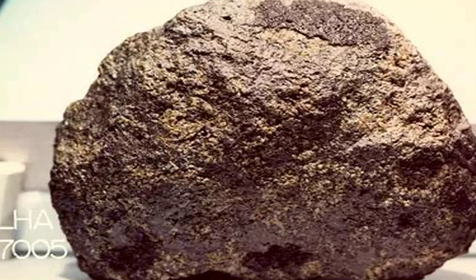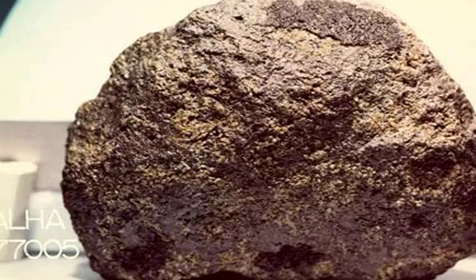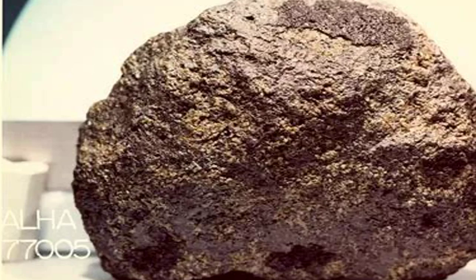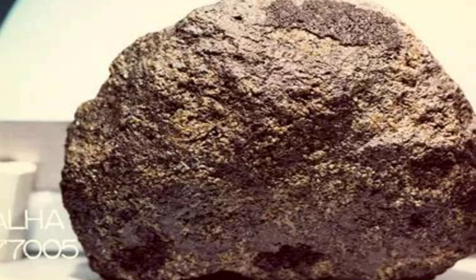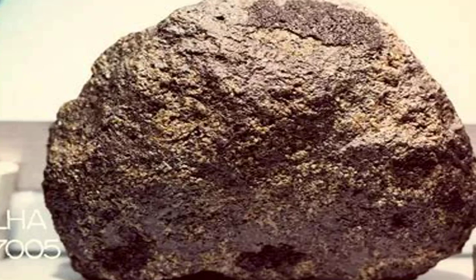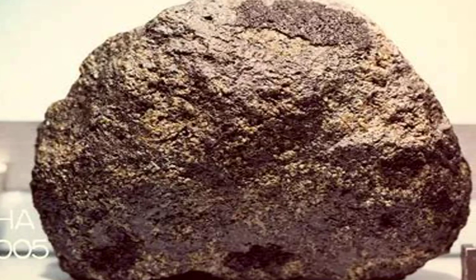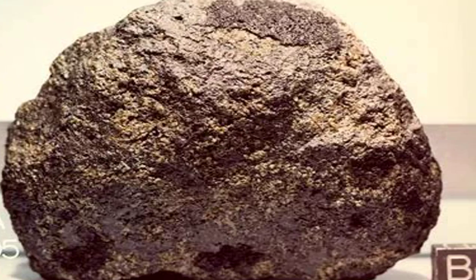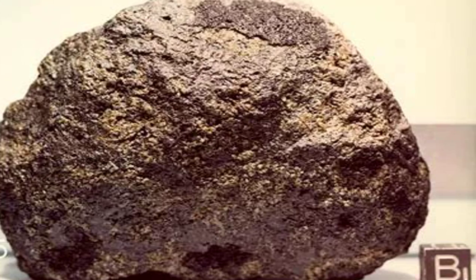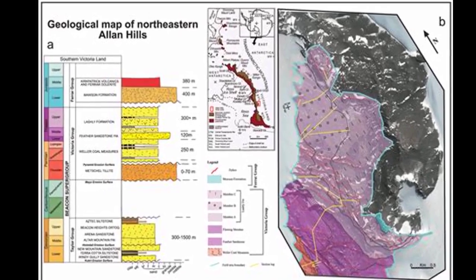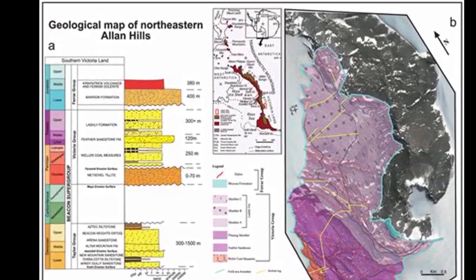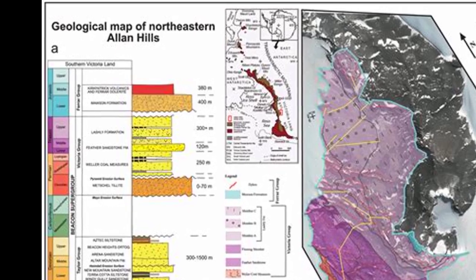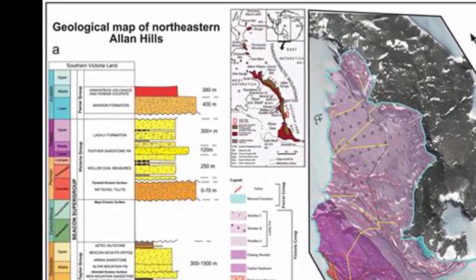Type: achondrite, unique. Physical description: the specimen is well-rounded on all faces except the south face, which is a partially broken surface. A well-developed dark fusion crust randomly covers approximately 5% of the meteorite's surface in small, thin patches.